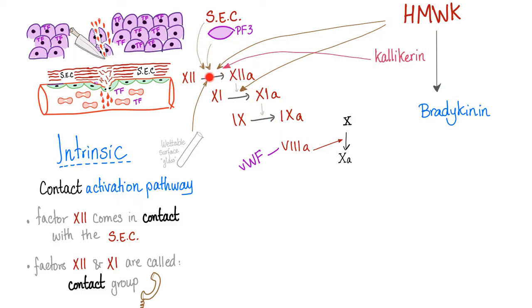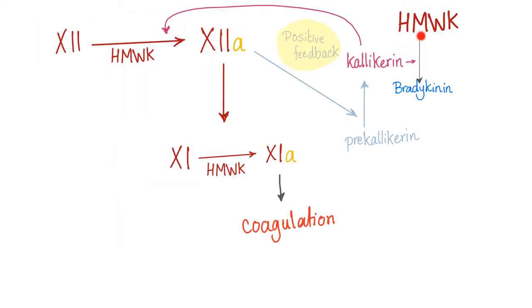Kallikrein only activates factor 12. High molecular weight kininogen, thanks to kallikrein, produces bradykinin. Kallikrein also activates factor 12. Factor 12a activates pre-kallikrein into kallikrein, which activates factor 12, which activates pre-kallikrein into kallikrein. This is called a positive feedback loop.